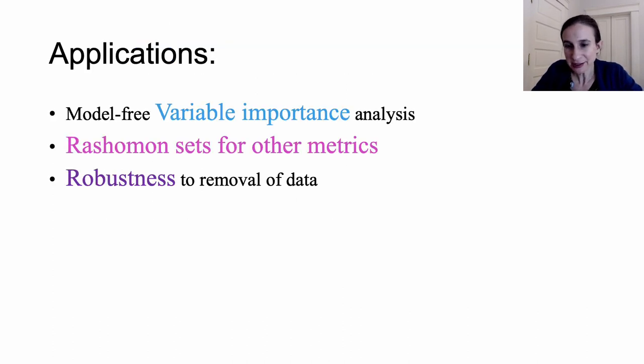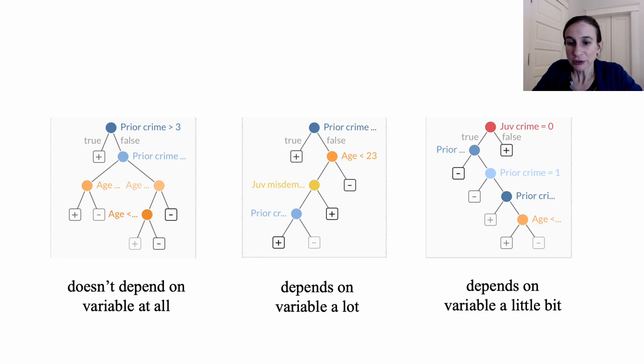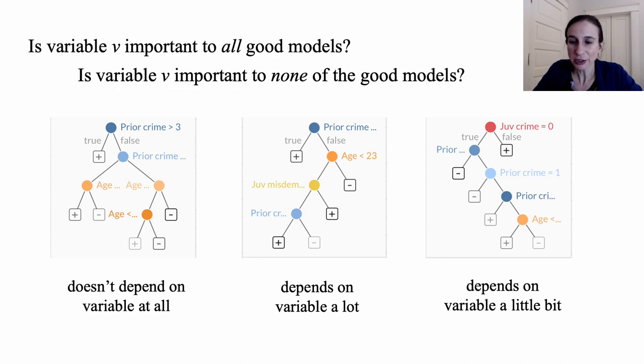Now in the paper we discussed several applications for TreeFARMS. The first one is a way to analyze variable importance that doesn't depend on a specific model. Now TreeFARMS can tell you whether a variable is important to all good models, to no good models, or to some but not all of them. And you can answer these questions directly by just looping over the Rashomon set from TreeFARMS.